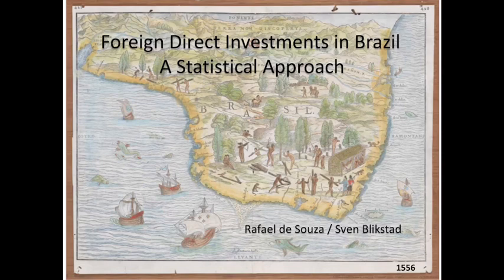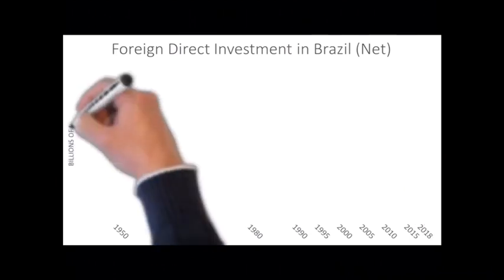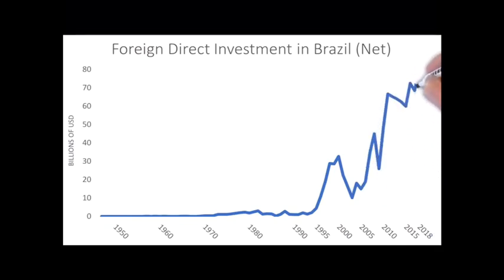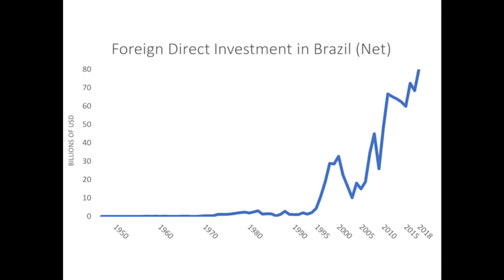The presentation is about foreign direct investment in Brazil. I started by showing a map from 1556 with signs of the first foreign direct investment in Brazil, where native Brazilians were encountered by Europeans coming to explore natural riches. The whole presentation is based on a chart showing a clear distinction between FDI before and after 1994, when the Real Plan stabilized inflation and enabled more companies to invest in Brazil.